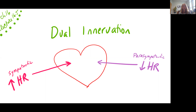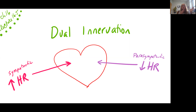Innervation is talking about the nerves penetrating and controlling the tissue. We have lots of tissues that are being controlled or innervated by both sympathetic and parasympathetic divisions. So that means we can turn it up, turn it down, turn it on, turn it off — and this is how we can control and maintain that homeostatic balance in our organ systems.